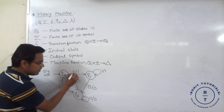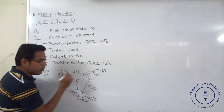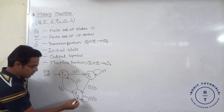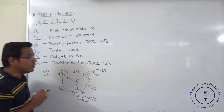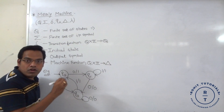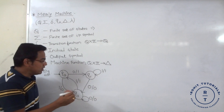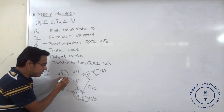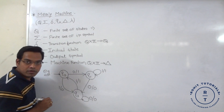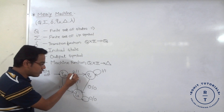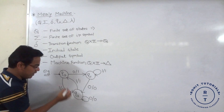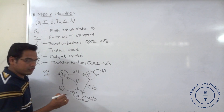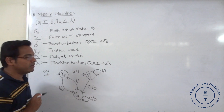Suppose Q0, input 0 is offered, it goes to Q1 and output is 1. Q0, input 1 is offered, it goes to Q2 and output is 0. The formal definition of the mille machine is that the output symbol totally depends upon the present state and present input symbol. Here Q0, input 0 is offered, the output is 1. Here Q2, input 0 is offered, the output is 0. So this is the definition of the mille machine.